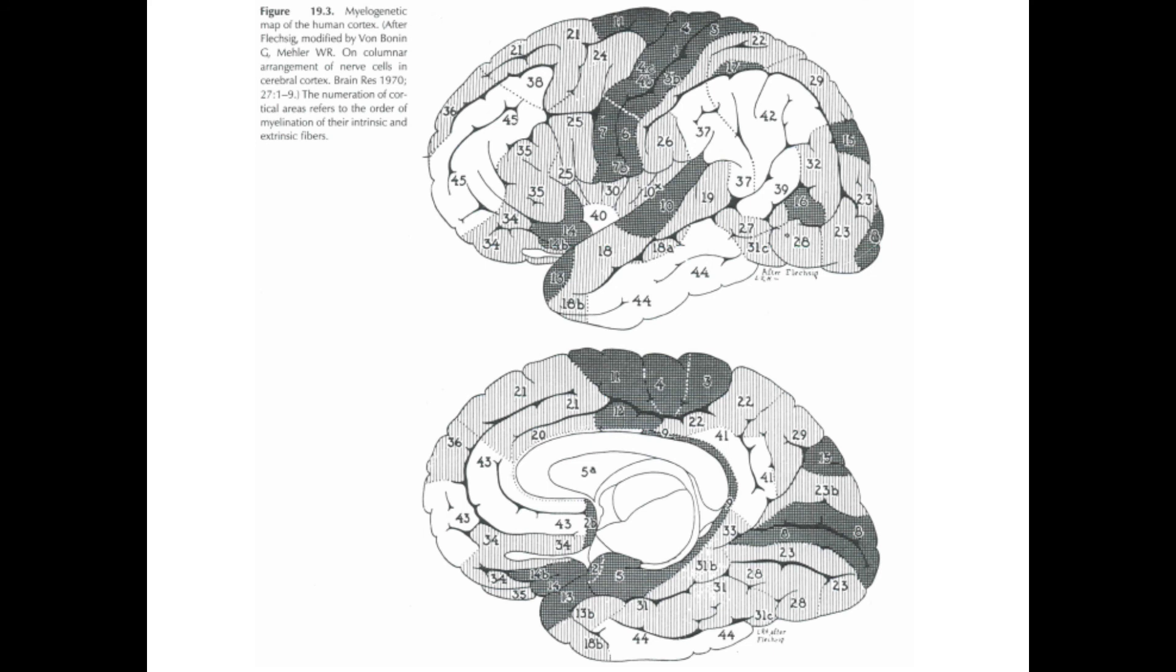And finally, I think this is a final image from this chapter, it's a myelogenetic map of the human cortex, it's just another kind of map. And that's it, don't forget to read the text carefully and I'll post some questions. So see you next class.